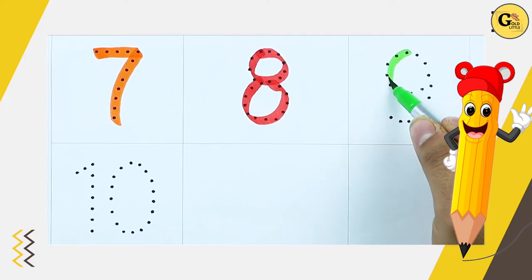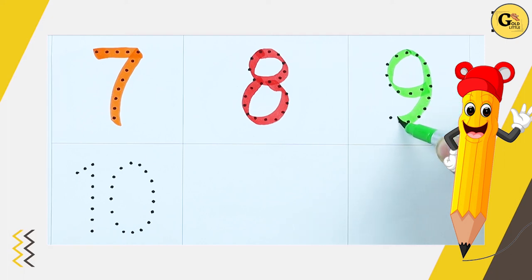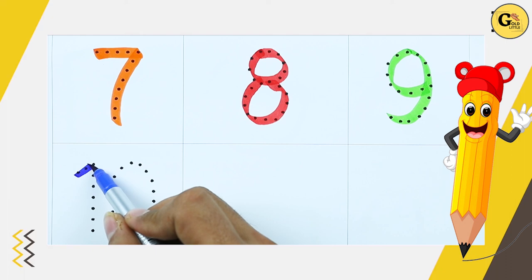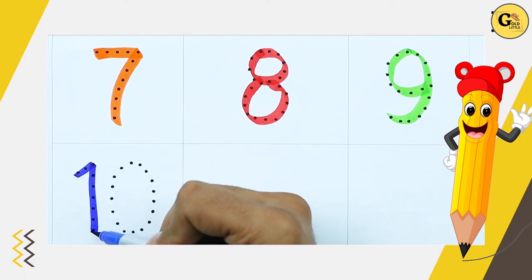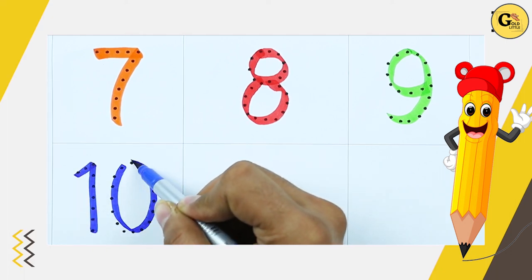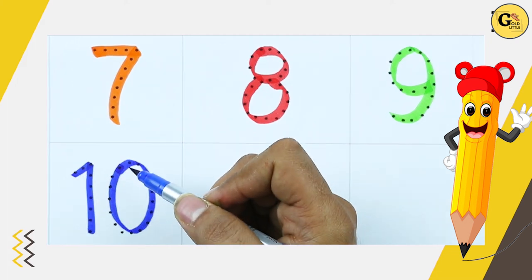Number 9 with green color. It's number 9. Number 10. 1 and 0. It's number 10 with blue color.